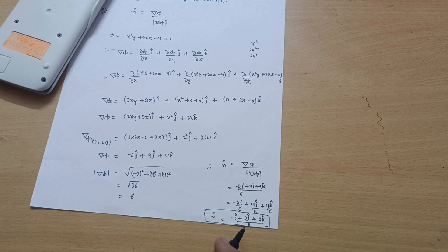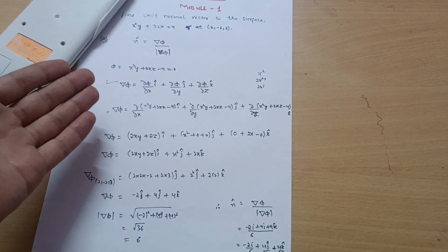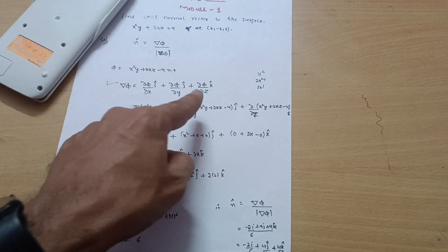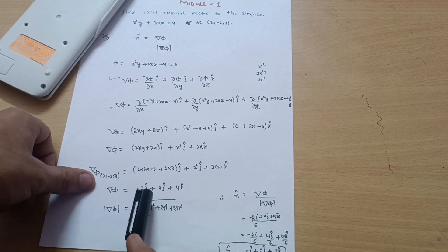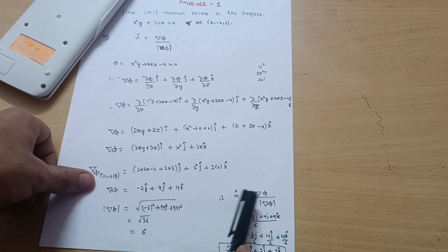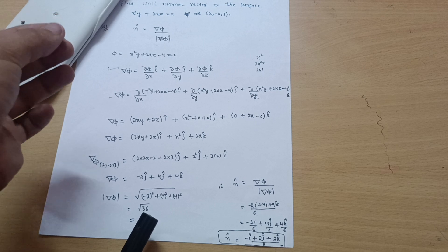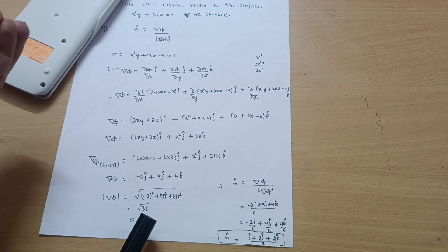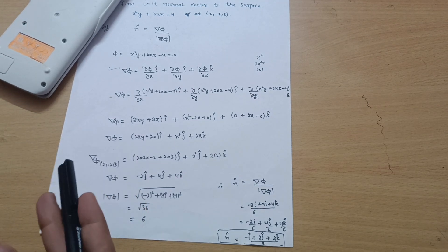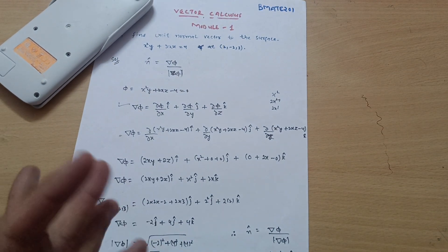I hope you have got this particular solution — how we are supposed to calculate the unit normal vector. This is a very simple procedure; you just need to remember the formula. Differentiate phi with respect to x, y, and z, calculate the magnitude, then substitute into the formula to get the unit normal vector. This is worth six or seven marks — just practice three or more problems and you will get full clarity. I hope this content was understood well. Share this video with all your friends who need it, and all the best for your future examinations. Thank you.